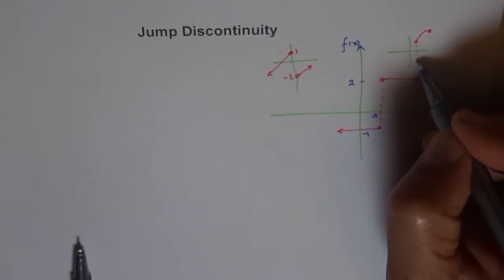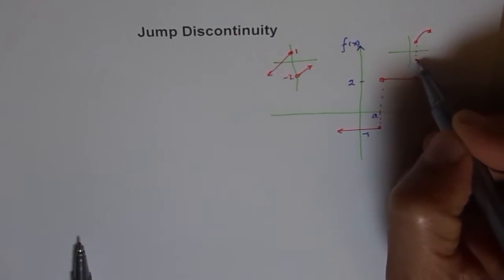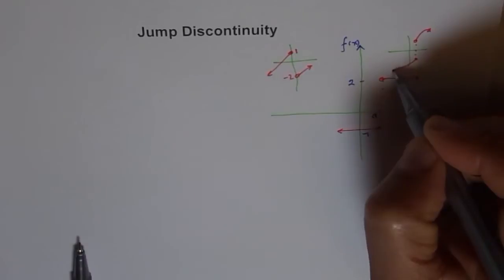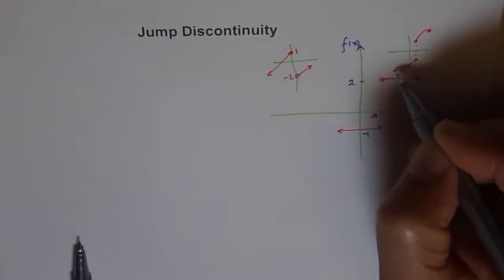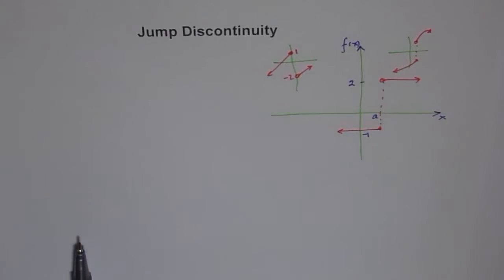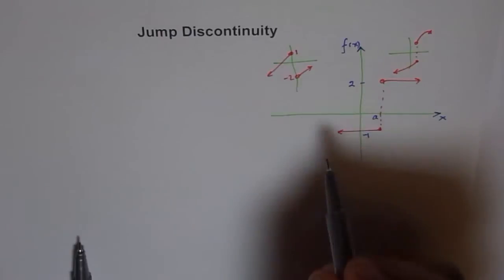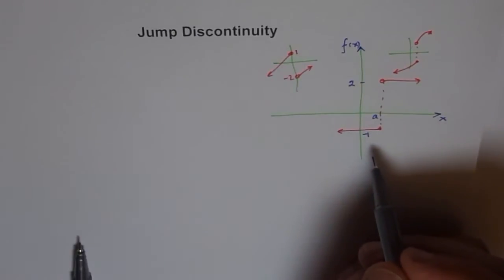A function could also look like this — somewhere here it is filled up and the function continues. Any type of function where we see at a point there's a jump is called jump discontinuity, because there is a discontinuity clearly.